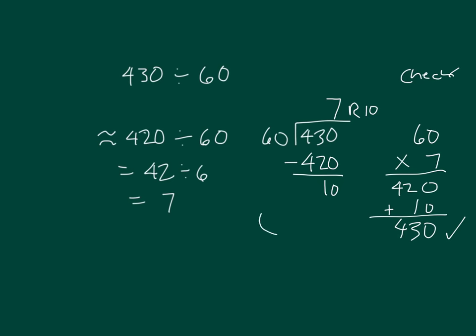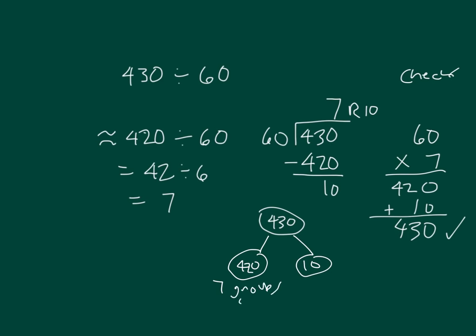What we did again is we took 430 and broke it apart into 420 and 10. And 420 was 7 groups of 60. When we put that together — 7 groups of 60 with 10 — we do get 430.